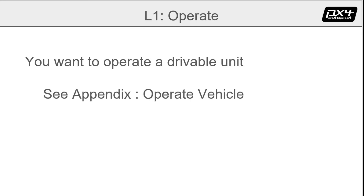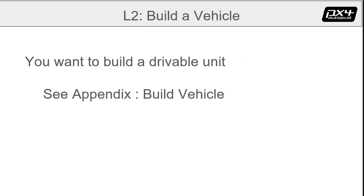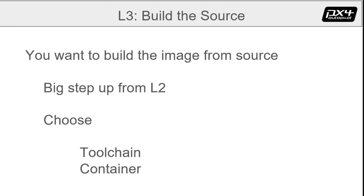Level one, operate — skip, see appendix. Level two, build a vehicle — also see appendix. Level three: build a PX4 image or executable from the source. This is a big step up in complexity from level two. Dev skills are very helpful.